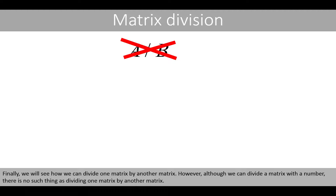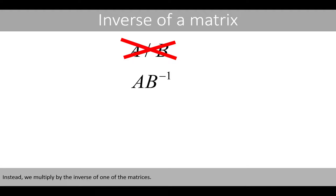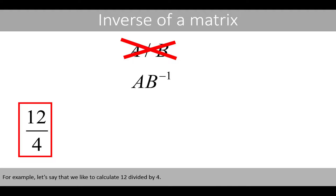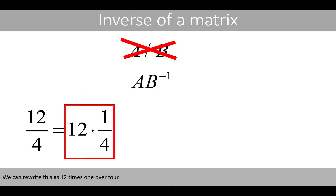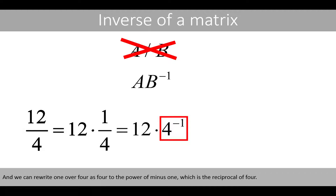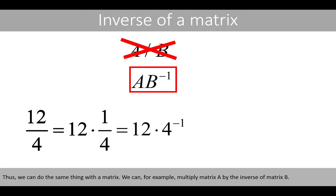Finally we'll see how we can divide one matrix by another matrix. However, although we can divide a matrix by a number, there is no such thing as dividing one matrix by another matrix. Instead we multiply by the inverse of one of the matrices. For example, 12 divided by 4 can be rewritten as 12 times 1 over 4, and 1 over 4 can be rewritten as 4 to the power of minus 1, which is the reciprocal of 4. Thus we can do the same thing with a matrix — we can multiply matrix A by the inverse of matrix B.